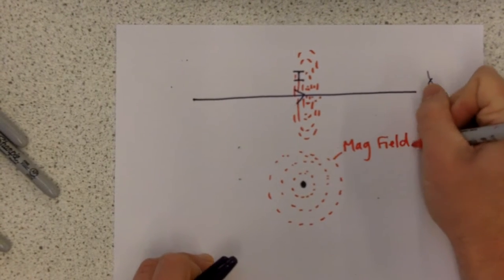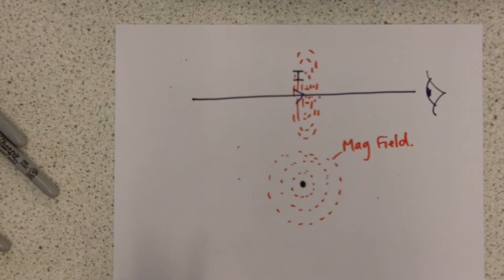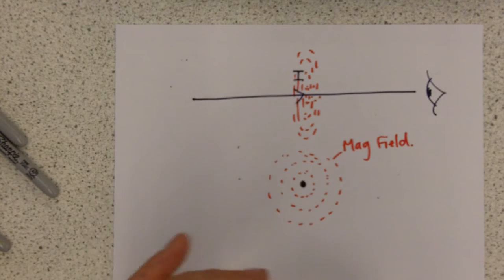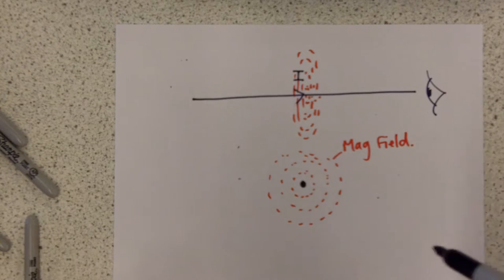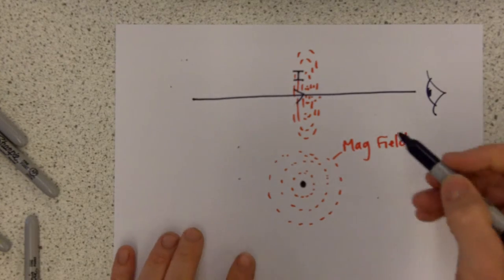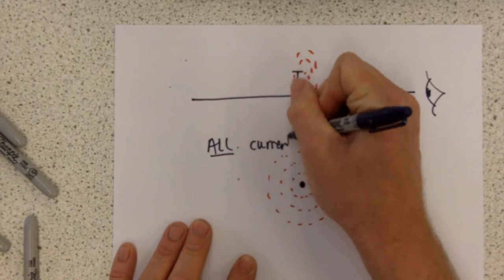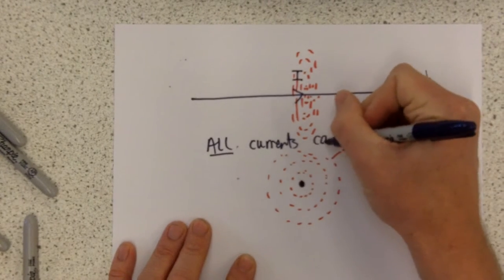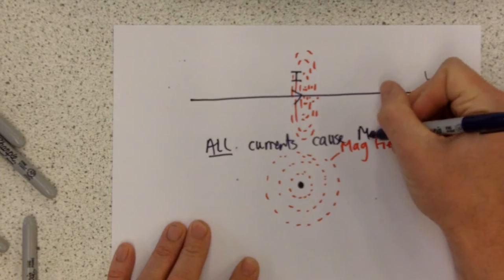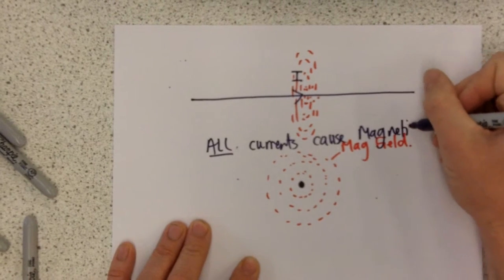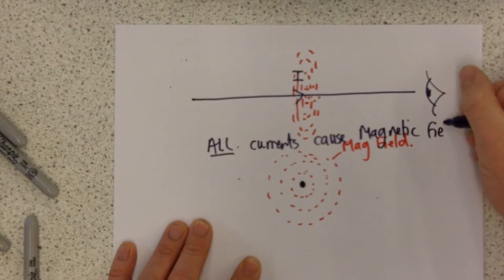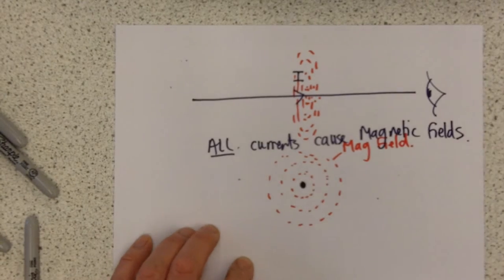Now a magnetic field can be visualized if you, for example, sprinkle iron filings onto a piece of paper with a magnet under it. Then the iron filings will line up with the magnetic field or flux lines. So the key idea is that all currents without exception cause magnetic fields.